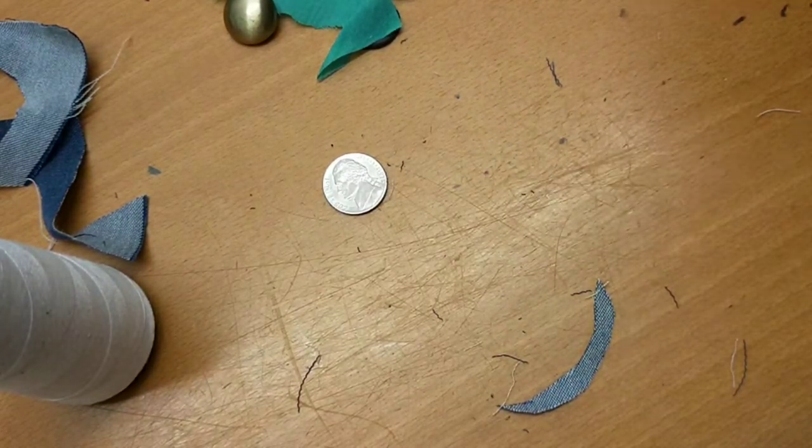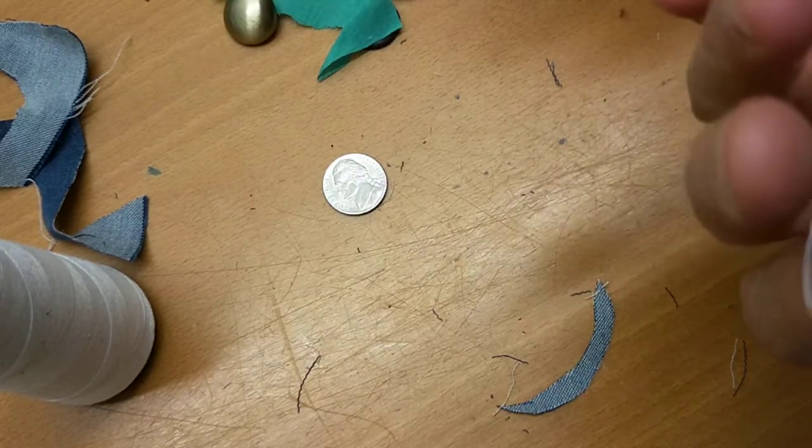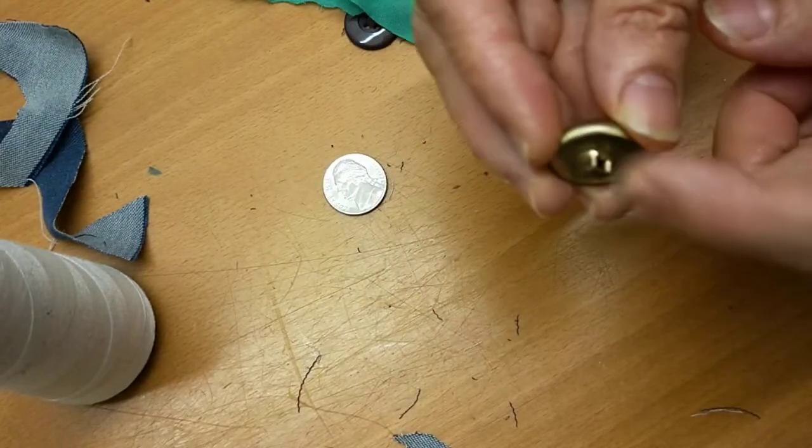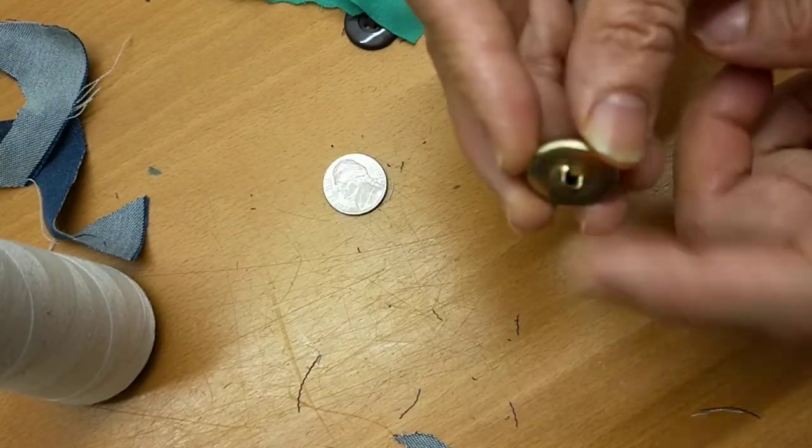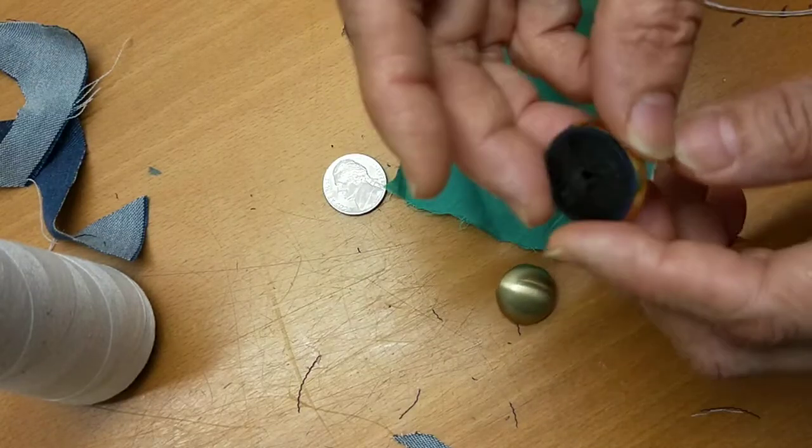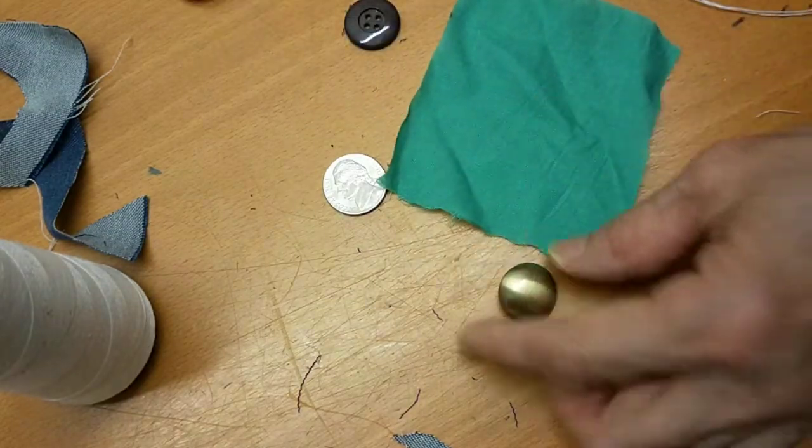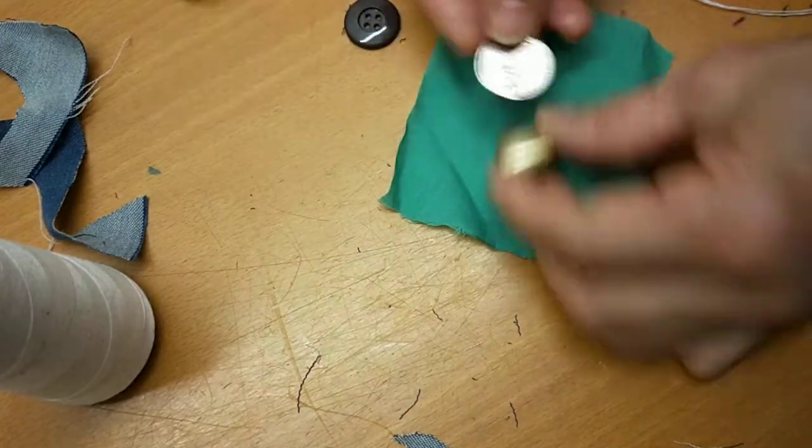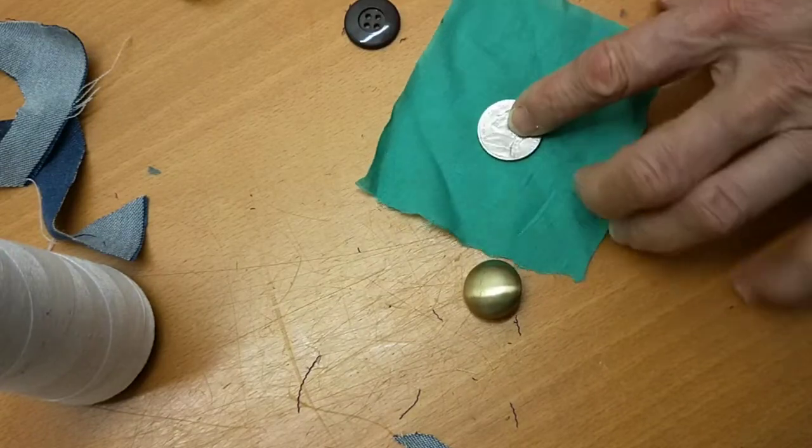Now we start with the shank button. This one has a hole so it's easy to put on your clothes. So how about I choose this one this time? With this one, this is about this size, so I borrow this.